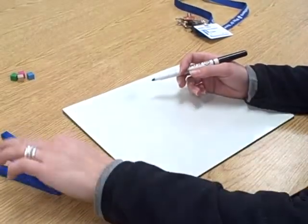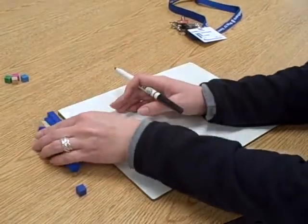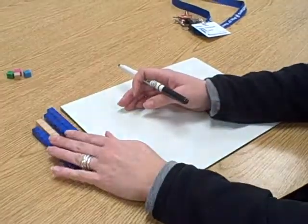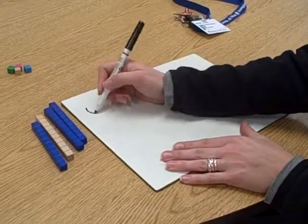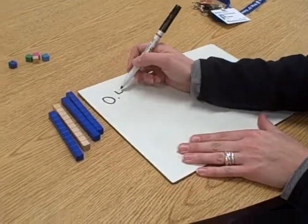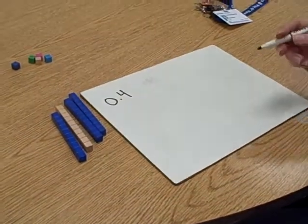So if we've got our decimal here, we said these are our tenths, so I've got one, two, three, four tenths. Zero whole and four tenths. There is our decimal.